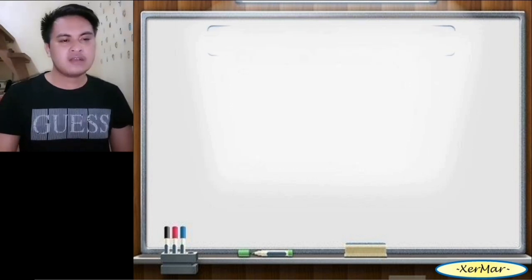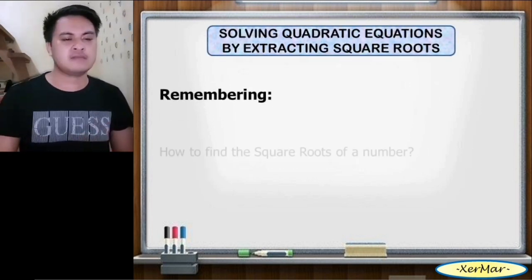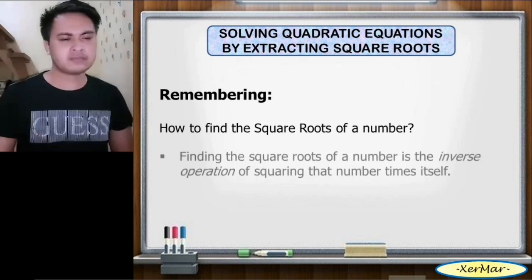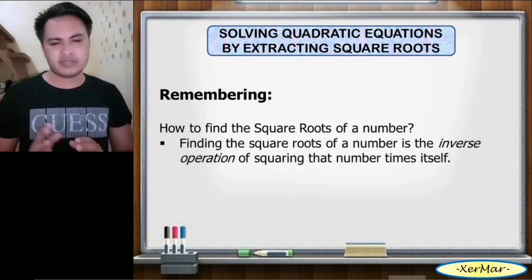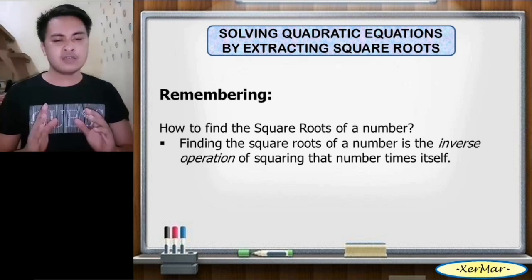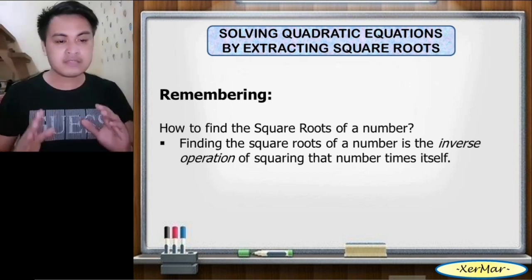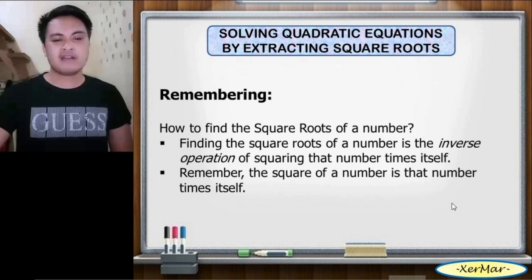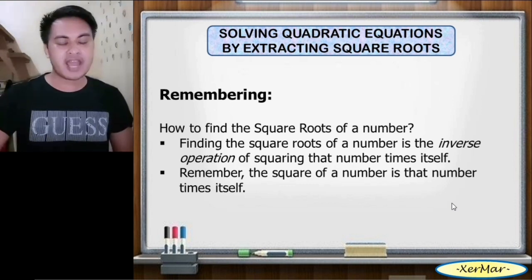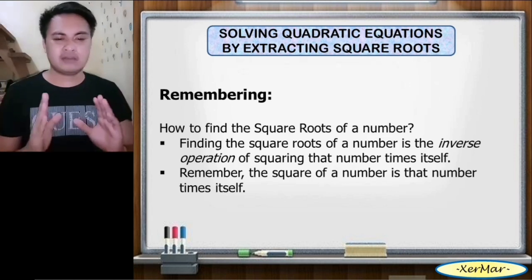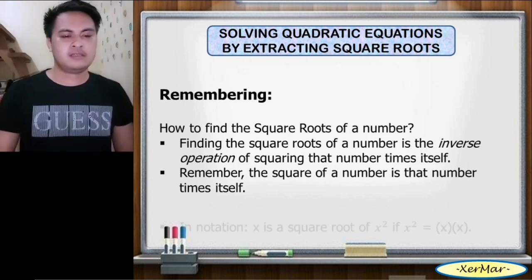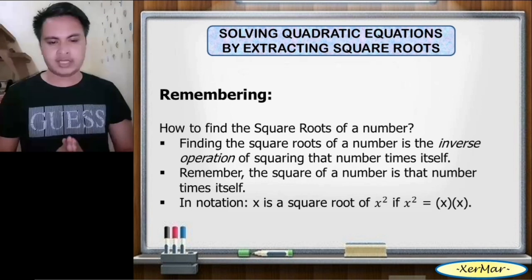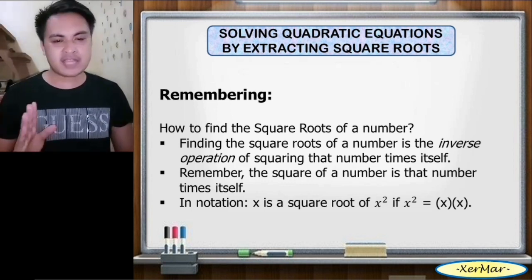Next, we have to remember this. The question is: how do you find the square roots of a number? Finding the square roots of a number is the inverse operation of squaring that number times itself. Remember, the square of a number is that number times itself — meaning we only multiply the number by itself. In notation, x is a square root of x squared, if x squared equals x times x.